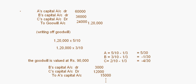In summary, two journal entries are passed: the first writes off the goodwill already appearing in the books, and the second adjusts for the newly valued goodwill after the change in profit sharing ratio. With that, we conclude today's session on the accounting treatment of goodwill. Thank you.